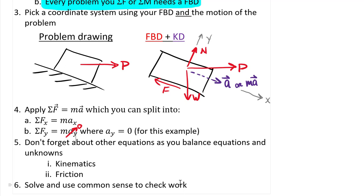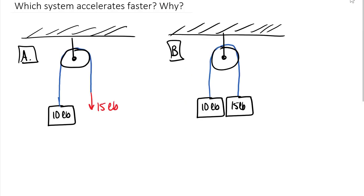One last thing before wrapping up: which system accelerates faster and why? System A has massless frictionless pulleys, a 10-pound weight block on the left, and a 15-pound force (not a block) on the right. System B has a 10-pound block on the left and a 15-pound block on the right. Pause the video and see if you can answer this before restarting.